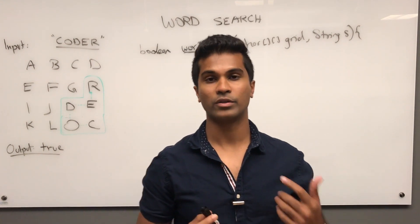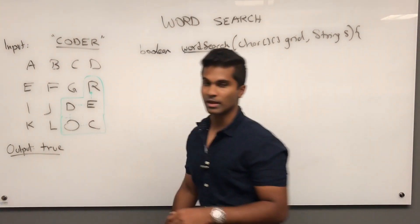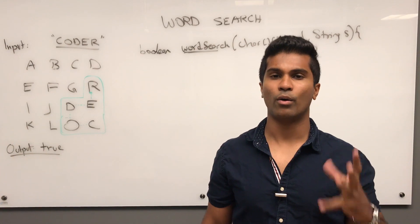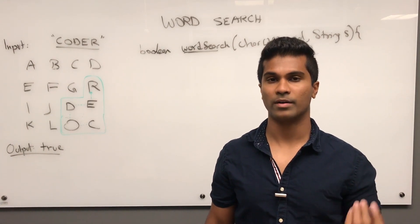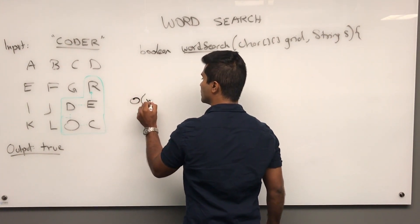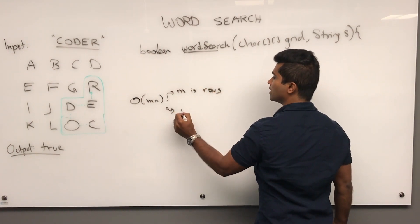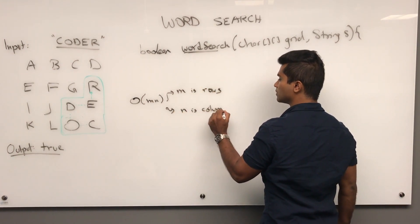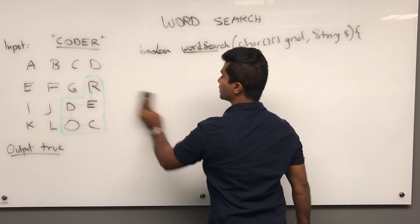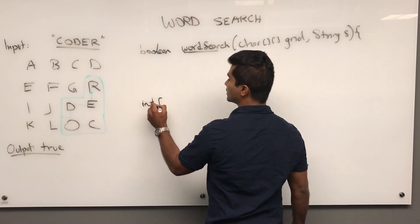The runtime complexity of this problem in the worst case is if we check every single square in the grid and can't find the word. That would be O(m * n), where m is the number of rows and n is the number of columns.